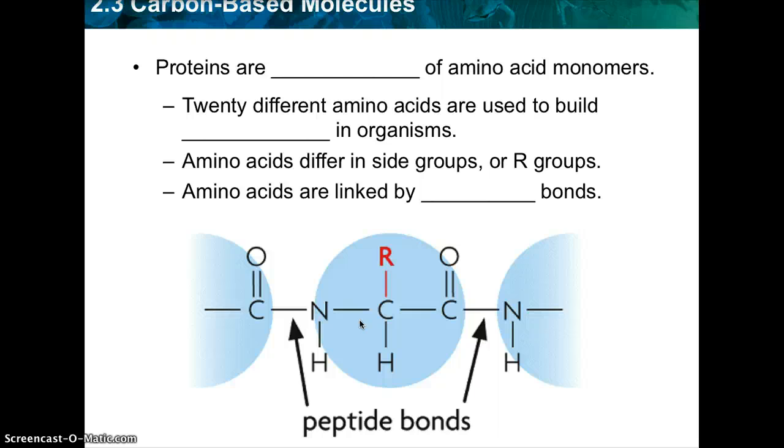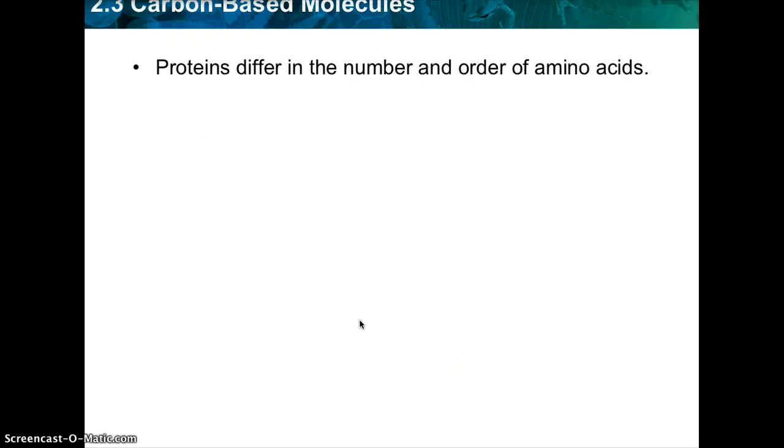So when we talk about the peptide bonds, just know that that's a specific type of covalent bond. So just keep that in your database. Know that a peptide bond is a covalent bond. So proteins differ in the number and order of amino acids. Amino acids interact to give protein its shape. And if you guys can recall back to when you talked about proteins, the amino acids build together to form proteins. And when proteins form different shapes, they have different functions. That goes back to that whole structure determines function.